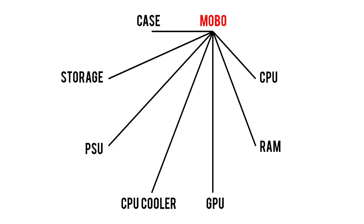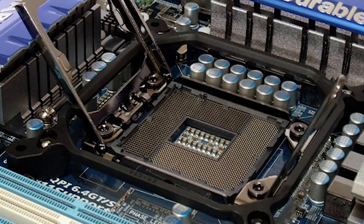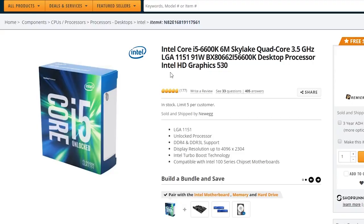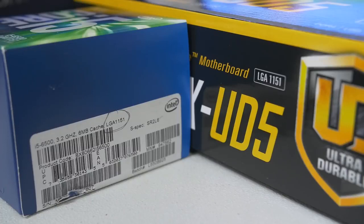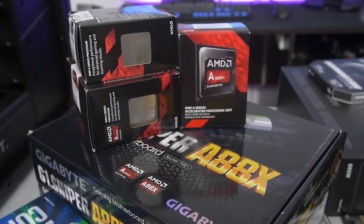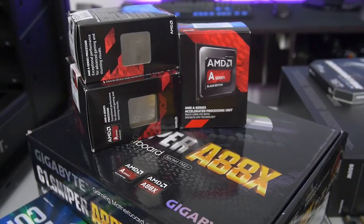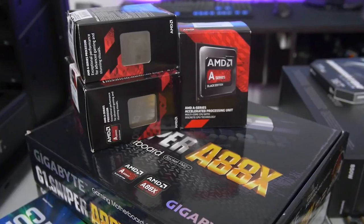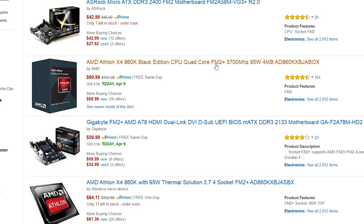Now let's move on to the motherboard. Since this component functions as a central hub, it requires compatibility with every other part on our list. When it comes to the motherboard and CPU, the most important factor is the socket type. Common Intel sockets today include LGA 1150, 1151, and 2011-V3 — these need to match exactly, no exceptions. AMD is a bit more flexible: its FM2 Plus and AM3 Plus motherboards are backwards compatible with older FM2 and AM3 CPUs, just not the other way around. It's still generally recommended to use an AMD CPU and motherboard of the same socket type.